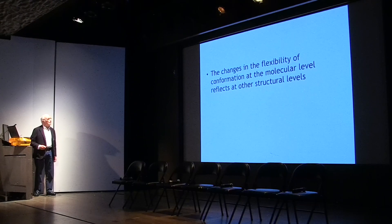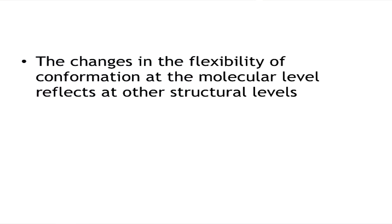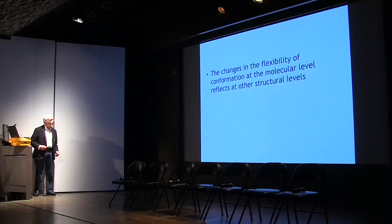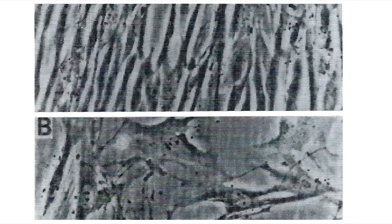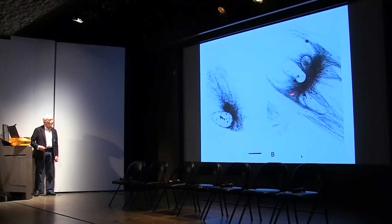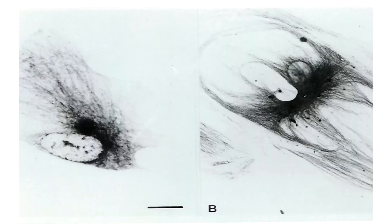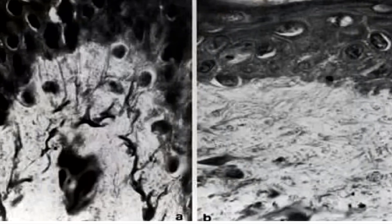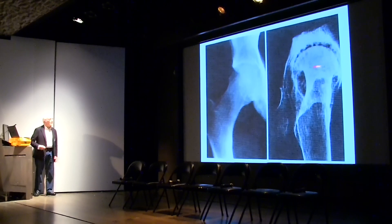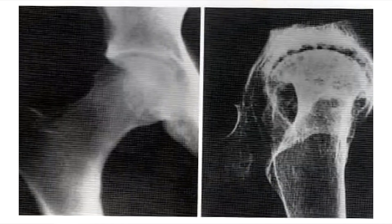The change in the flexibility of conformation at the molecular level reflects at other structural levels. In cells, the morphology changes due to reorganization of their cytoskeletal elements — you can see young cells and old cells. This shows the connective tissue — young and old connective tissue — where it is very obvious the structural reorganization that takes place. And of course in bone, this is a dramatic reorganization that creates a structure that is no longer adequate for function.